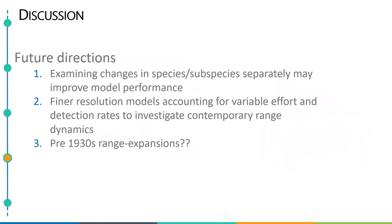Moving forward, I think examining plains and Appalachian spotted skunks in these kinds of distribution models separately might improve model performance. Conducting similar modeling exercises at finer scales that incorporate more data sources and account for variable detection rates could be highly beneficial for tracking contemporary range dynamics at scales relevant to habitat and species managers. Lastly, using similar methods to evaluate pre-1930s range could help test early hypotheses of range expansion into the northern Great Plains by plains spotted skunks, and could be a very interesting question going forward.